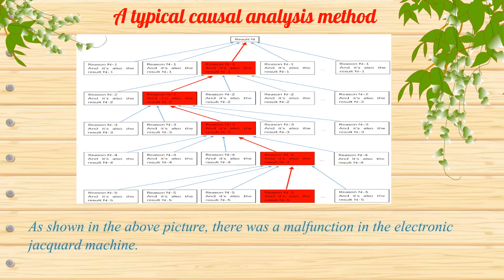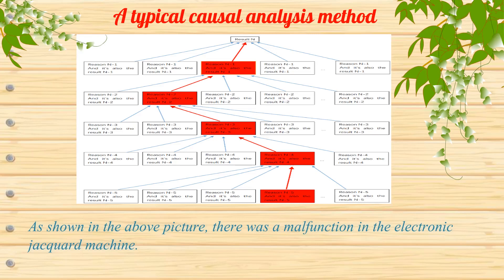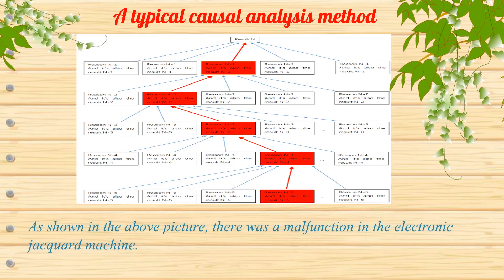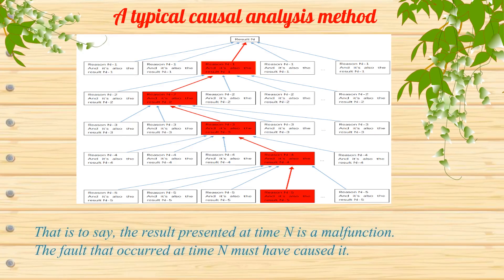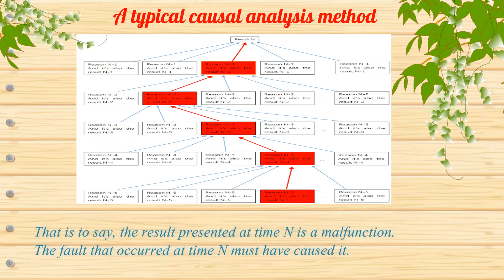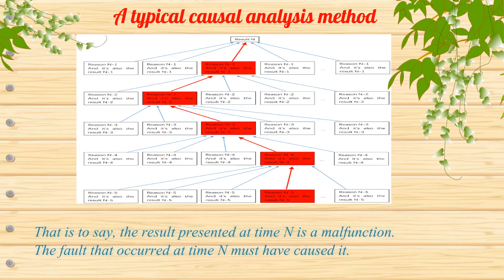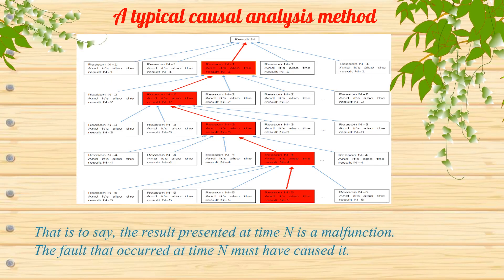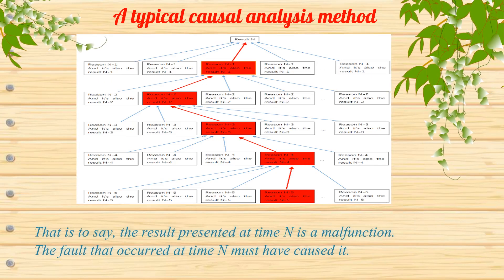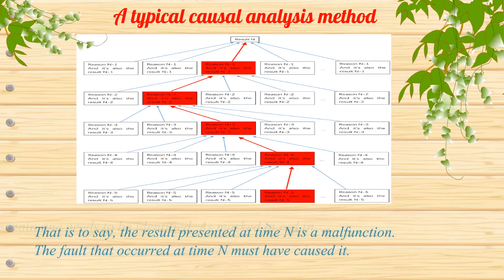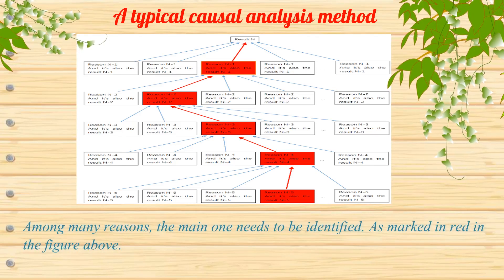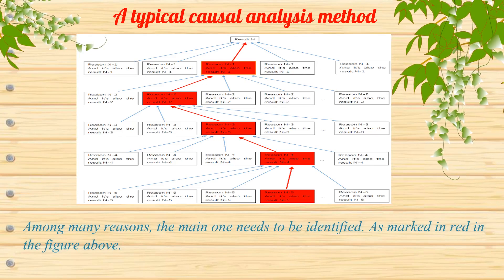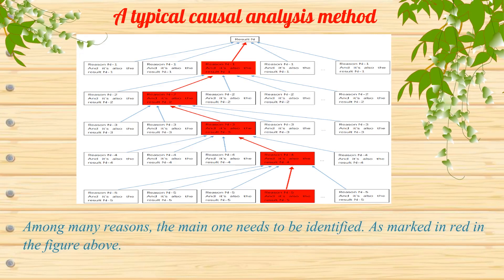As shown in the picture above, there was a malfunction in the electronic jacquard machine. The result presented at time n is a malfunction, and the fault that occurred at time n must have caused it. Among many reasons, the main one needs to be identified, as marked in red in the figure above.